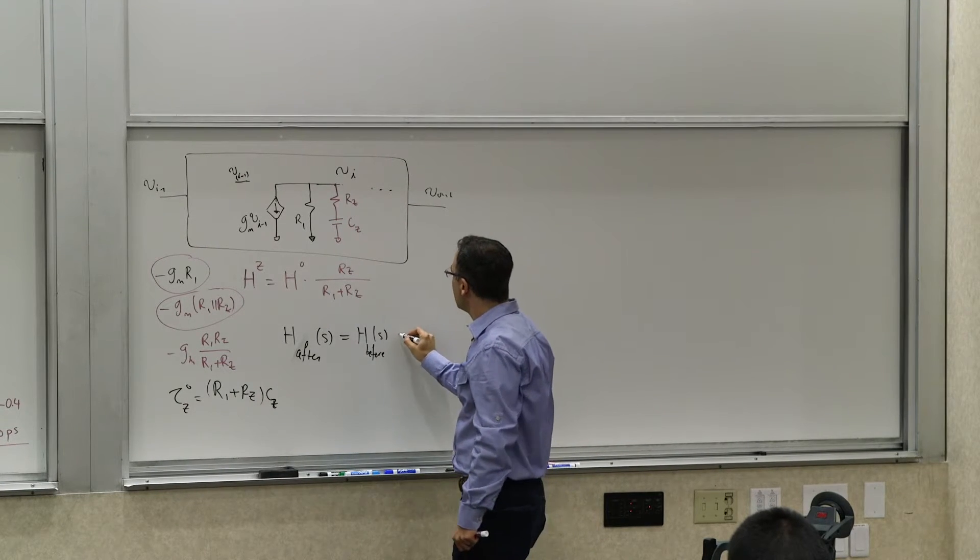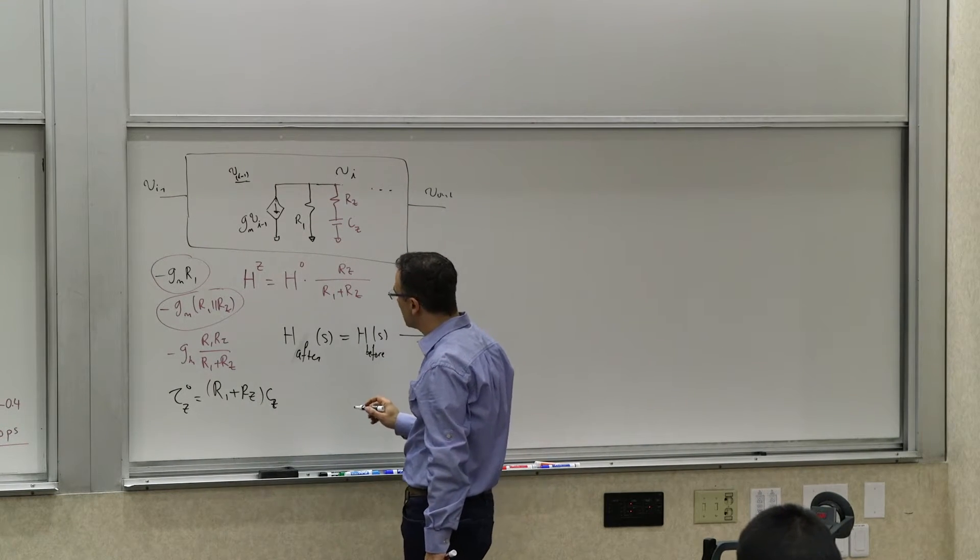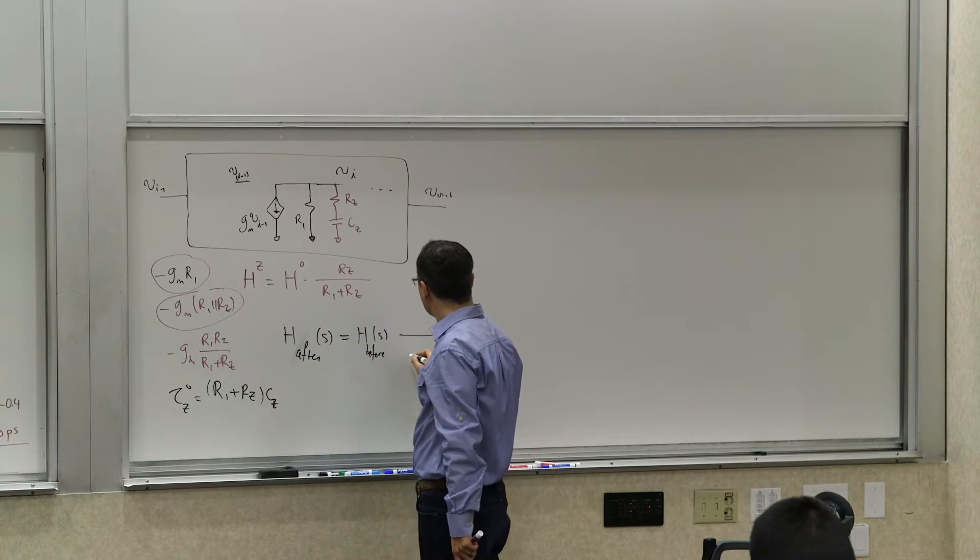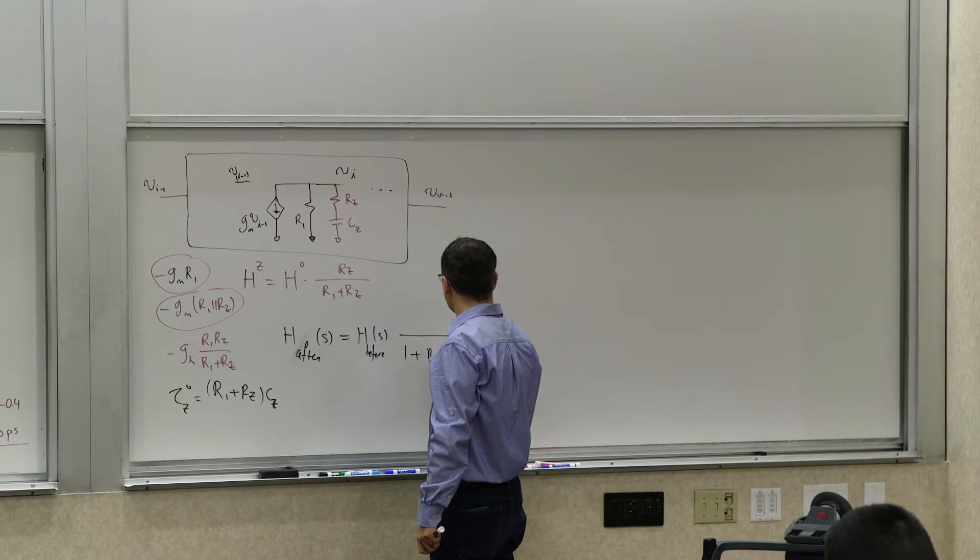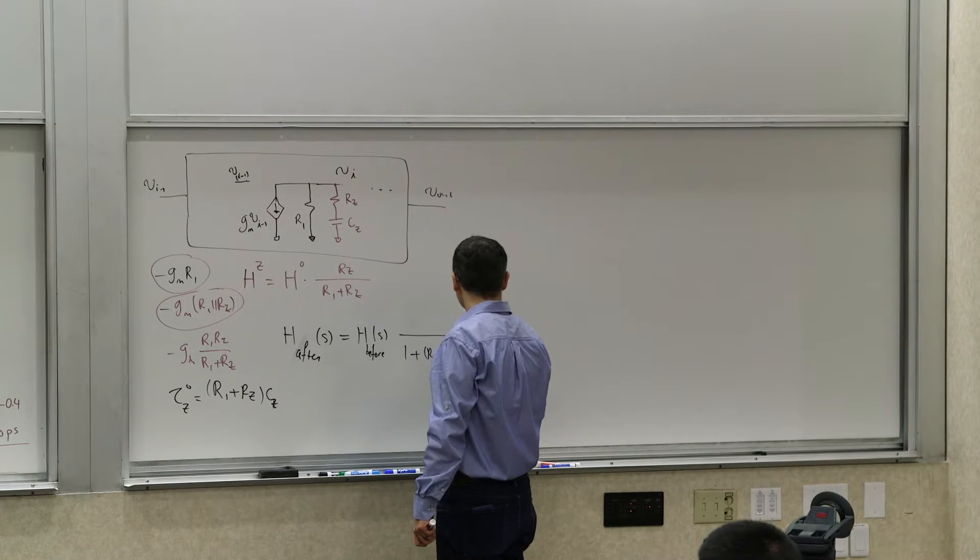And so that's the time constant. So the new transfer function is going to be the denominator of it. It would be 1 plus R1 plus Rz Cz.